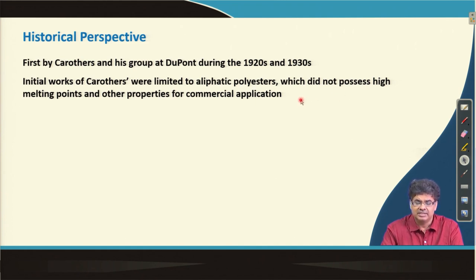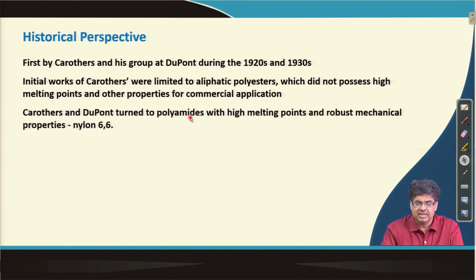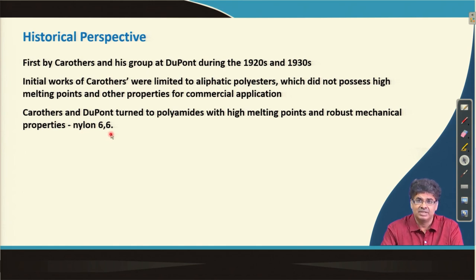They also synthesized aromatic polyesters of isophthalic acid and ethylene glycol, but those also did not have the required properties for commercial application. Hence, DuPont and Carothers' team moved to synthesizing polyamides, which had a high melting point and robust mechanical properties. The first useful synthetic polyamide was nylon 6-6, which actually began the polymer age.